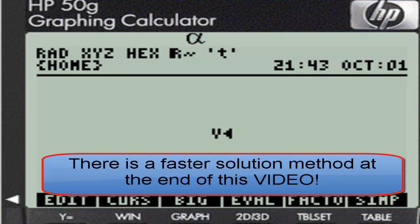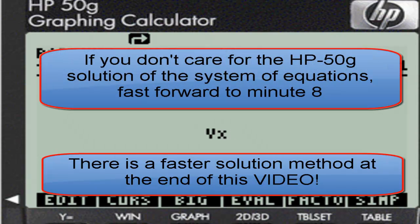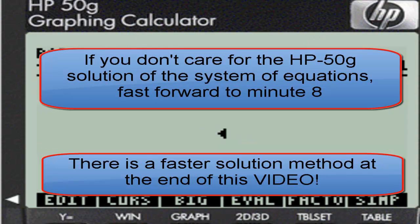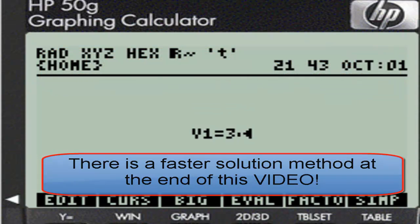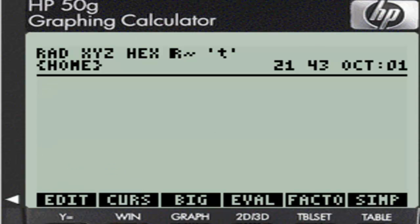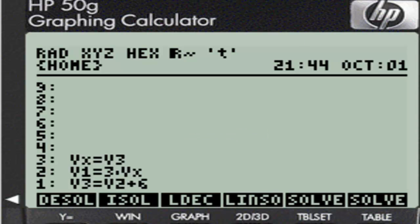Equation writer. Vx is equal to V3. That is our first equation. We enter that in the stack. Equation writer. Second equation. V1 is equal to 3 times Vx. And that is our second equation. Third equation. Go to the equation writer. V3 is equal to V2 plus six. That is our third equation. Enter. We have three.